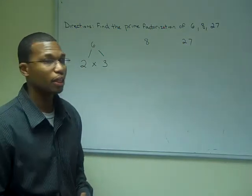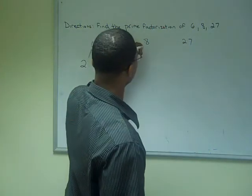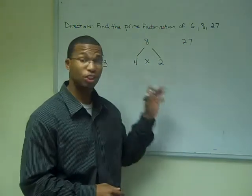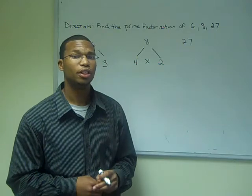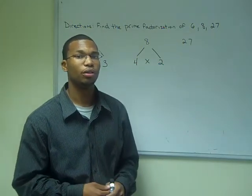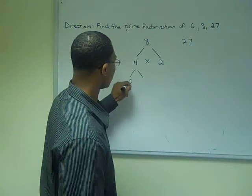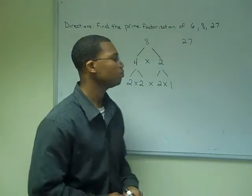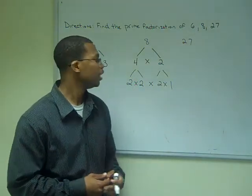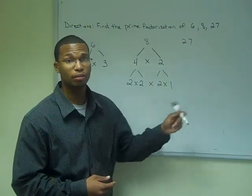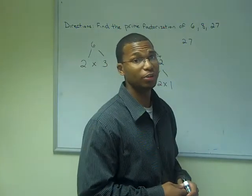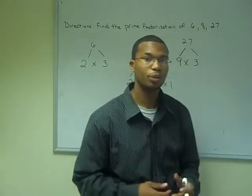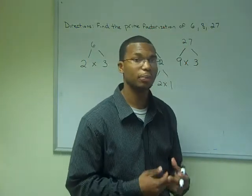Now let's go on to 8. I am going to choose the two factors 4 times 2. The number 2 is a prime number, but the number 4 is not a prime number. So I am going to find the prime factorization of 4. The prime factorization of 8 is 2 times 2 times 2. For 27, I am going to use 9 times 3. 3 is a prime number, but 9 isn't. So I must find the prime factorization of 9.